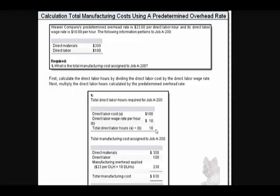Then we have to multiply the direct labor hours by the predetermined overhead rate, which they gave us as $23. So the total manufacturing cost will include the $300 of total material, the $100 of direct labor, and then the $23 predetermined overhead rate times the 10 hours, which comes to $230.